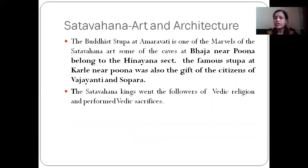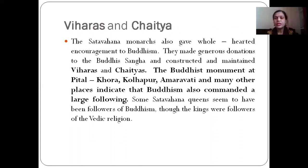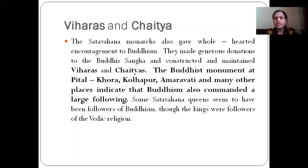The Satavahana contribution to Indian culture includes the famous stupa at Amaravati, which is a marvel of Satavahana art. Some of the caves at Bhaja near Pune belong to the Hinayana sect, and the famous stupa at Karle near Pune was also a gift of the citizens of Vaijayanti and Sopara. The Satavahana monarchs gave wholehearted encouragement to Buddhism — they made generous donations to the Buddhist sangha and constructed viharas and chaityas at Kotalingala, Kolhapur, Amaravati, and many other places, indicating that Buddhism commanded a large following.